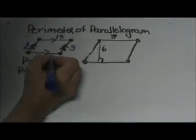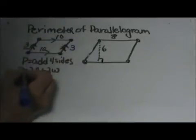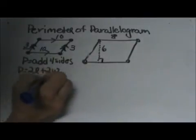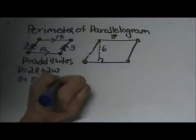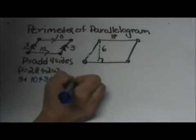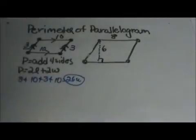If the top base is 10 then the bottom base is 10. And I can add all four sides. So I can add 3 plus 10 plus 3 plus 10 and that gives me 26 units. So that would be the perimeter.